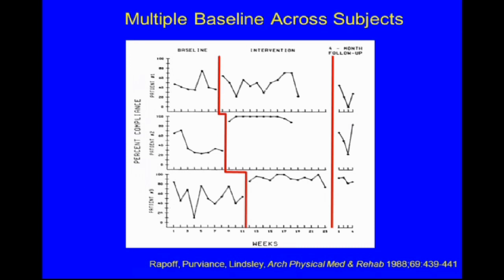This is a multiple baseline across subjects with three patients with arthritis looking at adherence to medications. For patient one, treatment — a combination of educational and behavioral strategies — was introduced, but not much increase was seen. Patient two had the intervention introduced after a period of time, and adherence did increase. Patient three also increased and stabilized during the intervention phase. At four-month follow-up, the intervention was concluded not effective for patient one, a teenager with additional difficulties, while the two younger children did much better.